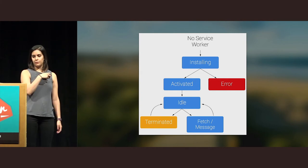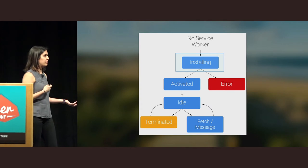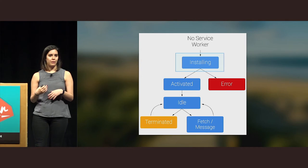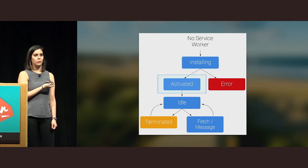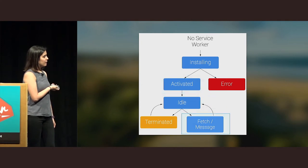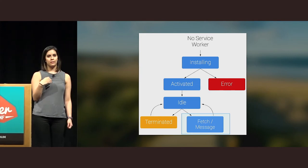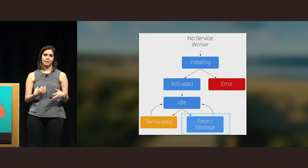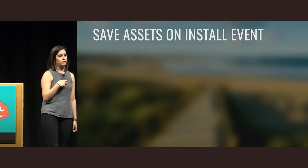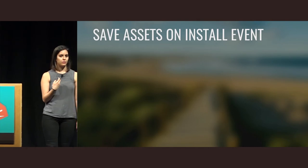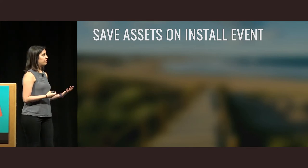Here we have the lifecycle of a service worker. The first event is the install event — this is after your service worker is downloaded. Here you can, for instance, download your app assets. After the install event, if everything works, your service worker gets activated. Then the service worker acts as a proxy: for every request your site makes, it goes through the service worker, giving you the flexibility to decide what to do with that request. One thing we could do is save all the assets on the install event — all the HTML, CSS, and images — so even if I'm offline, I can still show that.